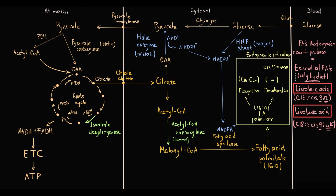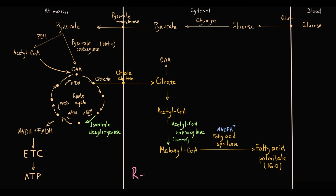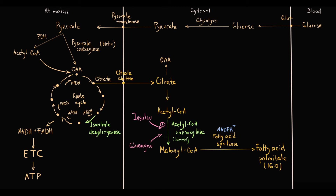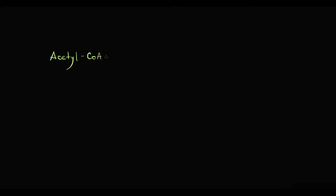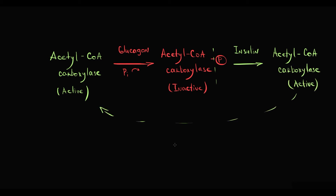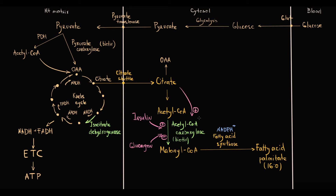The most high-yield concept in fatty acid synthesis is how the entire process is regulated — which factors determine in which direction acetyl-CoA will go. Acetyl-CoA carboxylase is the crucial enzyme and has complex regulation. First, it has hormonal regulation: insulin stimulates this enzyme and glucagon inhibits it. Acetyl-CoA carboxylase is inhibited in its phosphorylated state and activated in its dephosphorylated state. Glucagon causes phosphorylation, thereby inhibiting it; insulin causes dephosphorylation, thereby activating it. Additionally, acetyl-CoA carboxylase is allosterically stimulated by citrate and inhibited by palmitoyl-CoA, the final product of fatty acid synthesis.